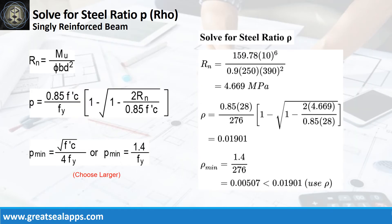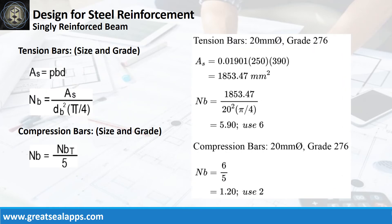Given maximum moment equals 159.78 kN·m, resistance factor equals 0.9, B equals 250 mm, and D equals 390 mm, the beam design ratio RN equals 4.669 MPa, and reinforcement ratio rho equals 0.01901. Given these values, the area of steel for tension bars is 1853.47 square millimeters, and the number of bars for 20 mm bar is 6. The number of compression bars is 2.